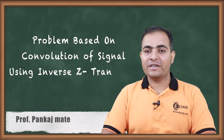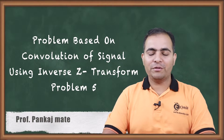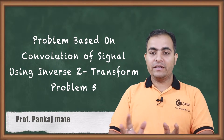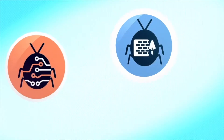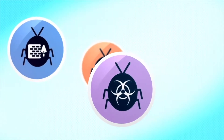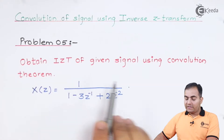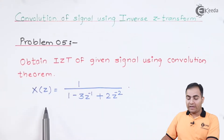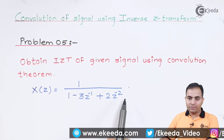Hello friends, today we are going to study problem number 5, which is based on convolution of signals using inverse Z-transform. The question is: obtain the inverse Z-transform of x(z) = 1 / (1 - 3z⁻¹ + 2z⁻²) using the convolution theorem.